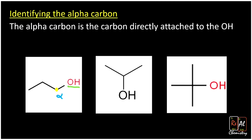For this middle alcohol, we once again identify our OH group and then find the very first carbon it's attached to — that's our alpha carbon. For the tertiary alcohol on the end, we look at the OH group and the very first carbon attached to it is right there. Basically, you're looking for that first vertex after the OH, and that's going to be the alpha carbon.